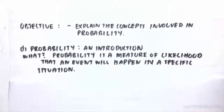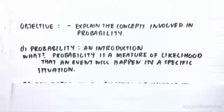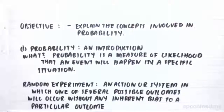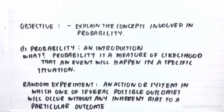So firstly, what is it? Probability is the measure of likelihood or chance that an event will happen in a specific situation. A random experiment is an action or system in which one or several possible outcomes will occur without any inherent bias to a particular outcome.